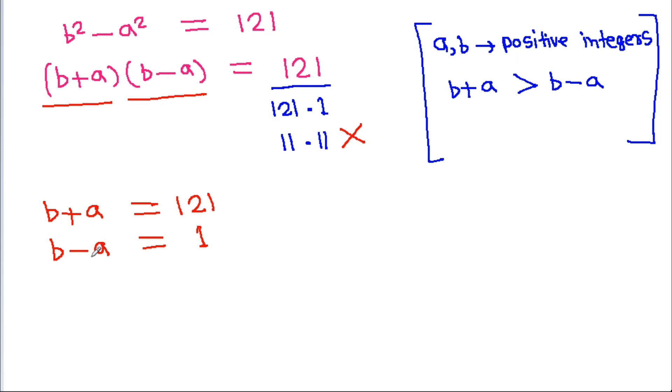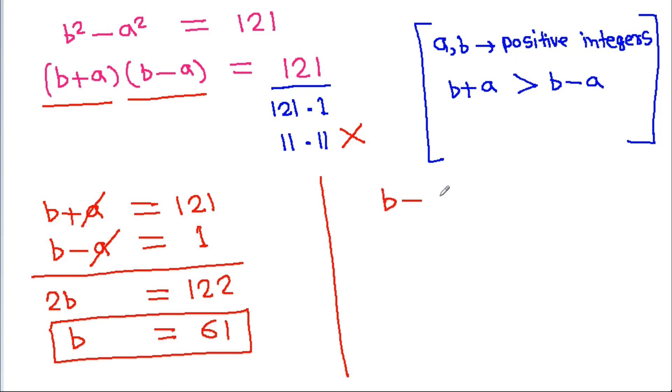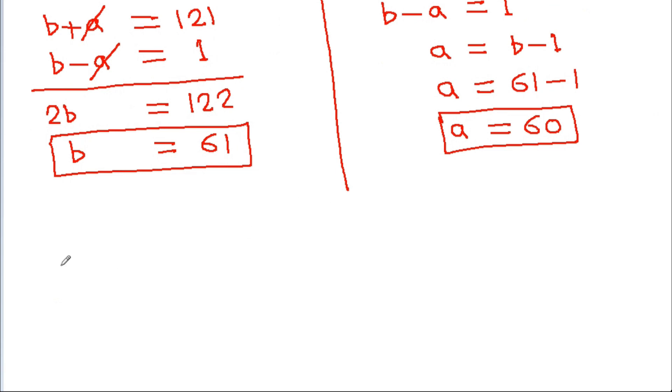If we add both equations, a will cancel and 2b = 122, so b = 61. Since b-a = 1, a = b-1, so a = 60.